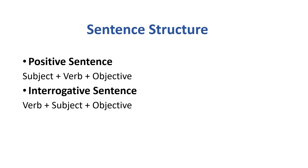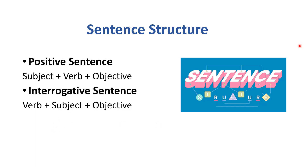First of all, let's talk about the sentence structure. A positive sentence is a normal sentence. For example, 'He plays cricket.' This is a positive sentence because there is a subject, verb, and object. 'He' is the subject, 'plays' is the verb, and 'cricket' is the object. Now in an interrogative sentence, the verb comes first — for example, 'Did he play cricket?' — the verb comes first. If you have this structure in mind, inversion will be better understood.